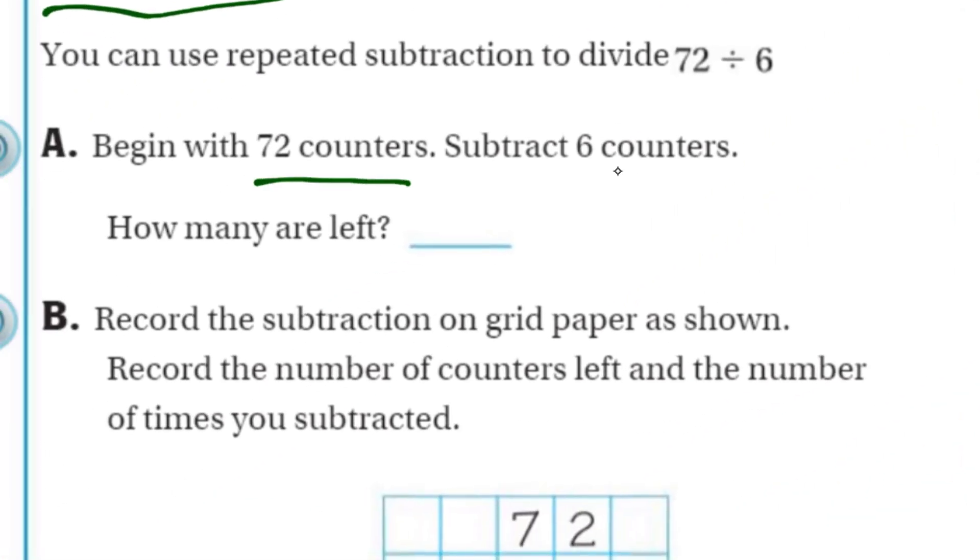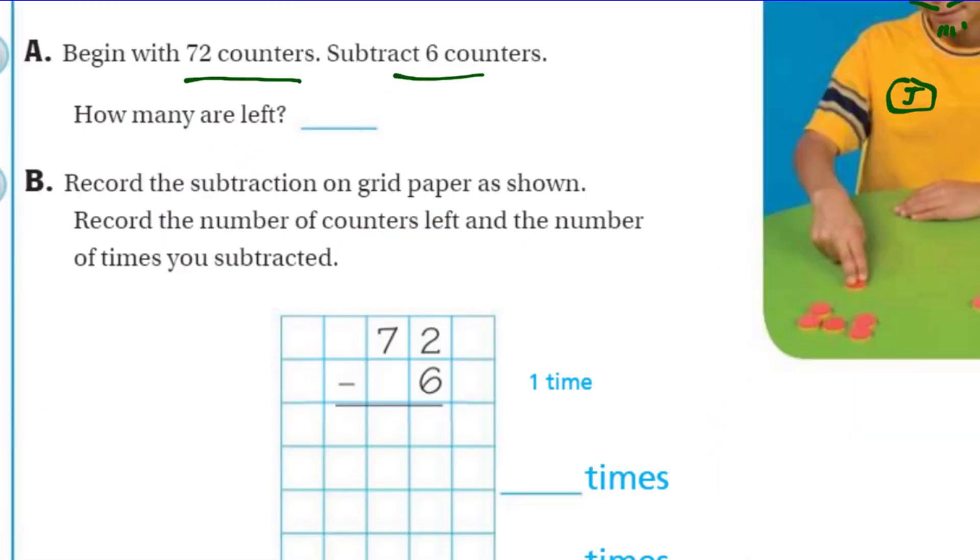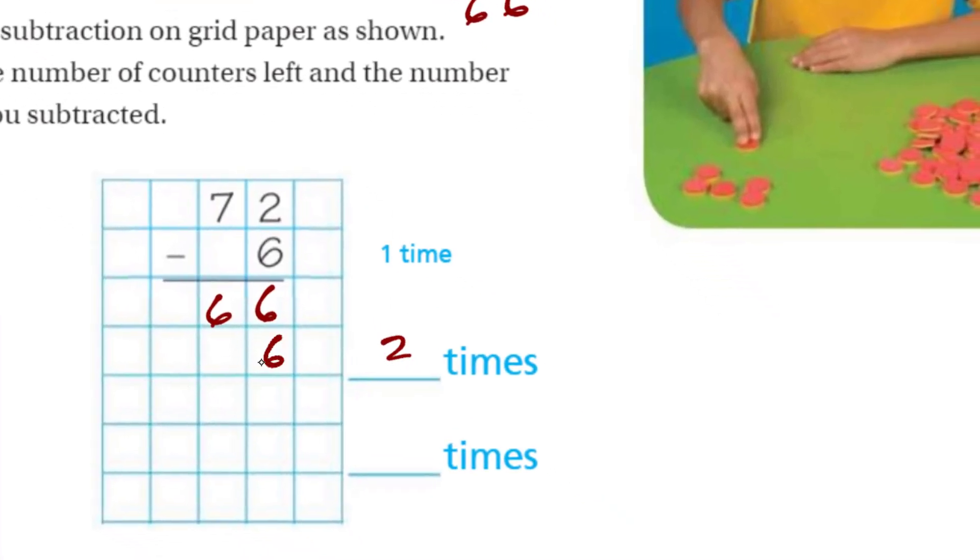Begin with 72 counters. Subtract six counters. How many are left? I'm just going to go ahead and I can see down below they have a little table there. So, 72, and we're going to take six away because we're subtracting. Of course, I'm going to need to regroup here. And now I'm ending up with, looks like 66. So I'm going to have 66 left over. Now, let's just record the subtraction on grid paper as shown. Record the number of counters left and the number of times you subtracted. So, we already know now we have an answer of 66. We subtracted one time. Of course, this is going to be two times. So, we're going to subtract another six here. I end up with 60. Pretty easy. Now, I'm going to go ahead and do it another time. I have done it twice. This is going to bring me to 54.